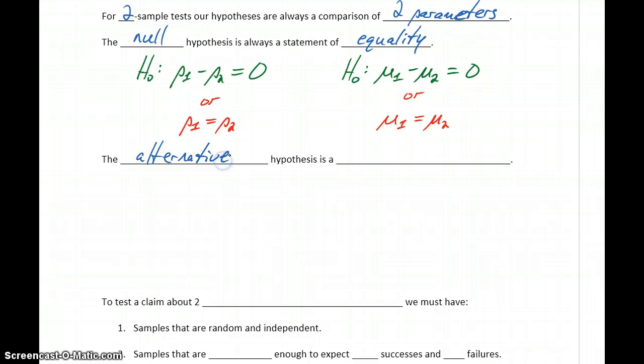The alternative hypothesis, just like with our one sample tests, will still be a strict inequality, and we'll make use of those same symbols as before. So we could have p1 minus p2 is greater than zero,